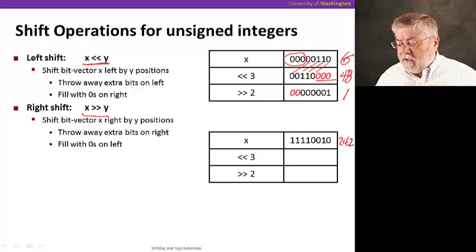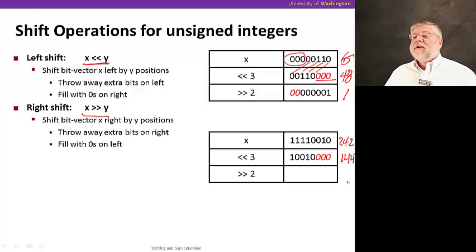Let's take a look at this other example with the number 242, represented in our 8 bits. When we shift to the left by 3, we are going to multiply that by 8. So we're going to get this value, which is actually the number 144.